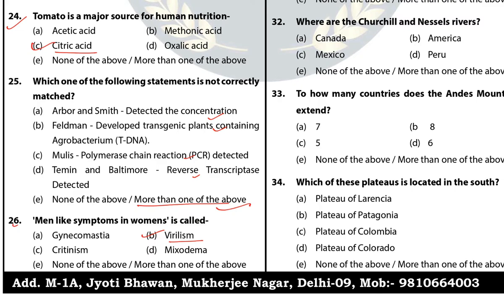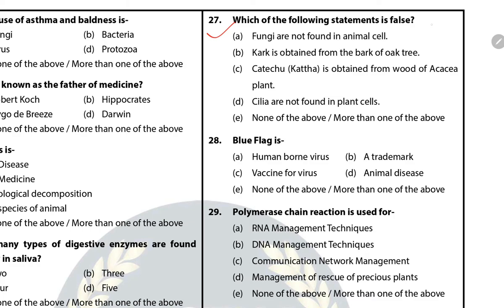Question 27: Which of the following statements is false? The answer is E — None of the above. All the statements here are true.